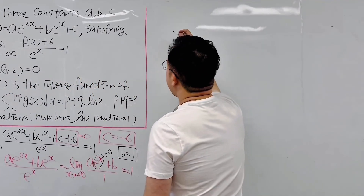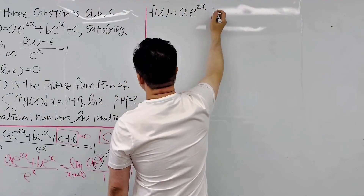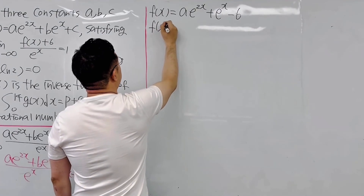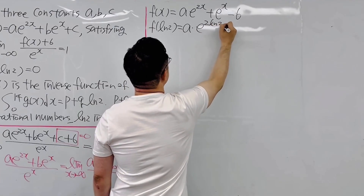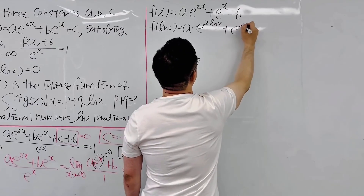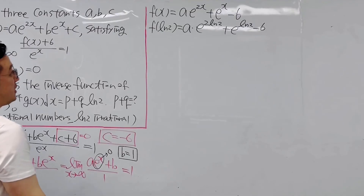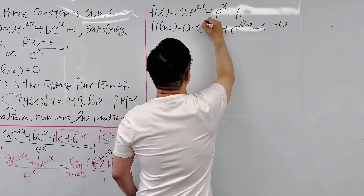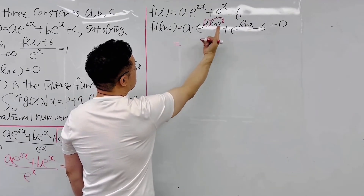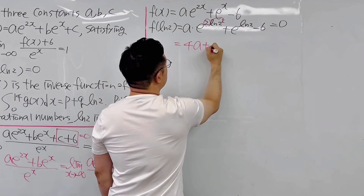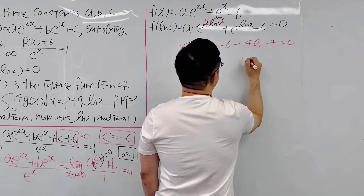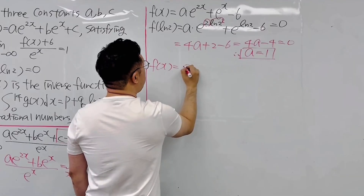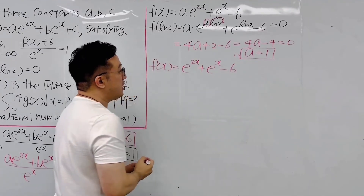So far, f of x is a times e to the power of 2x plus e to the power of x minus 6. Now f of ln 2 equals a times e to the power of 2 times ln 2, plus e to the power of ln 2, minus 6. The first term simplifies to 4a, and the second term is 2, giving 4a minus 4 equals 0, so a equals 1/2. The complete form of f of x is e to the power of 2x plus e to the power of x minus 6.